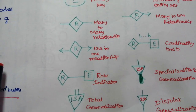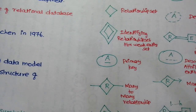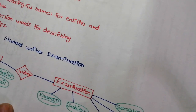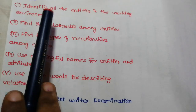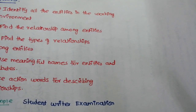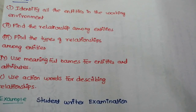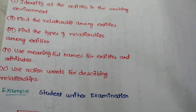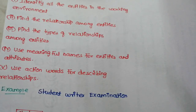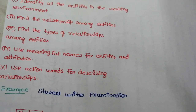So these are the entity relationship diagram components. Now, how to use an entity diagram — use the rules and components. Use all the entities in the working environment. One customer will give you the requirement, and you do the analysis. There are many entities in the organization. For example, if there is a university, there is a student, an examination, and an accounts department. You collect all entities.